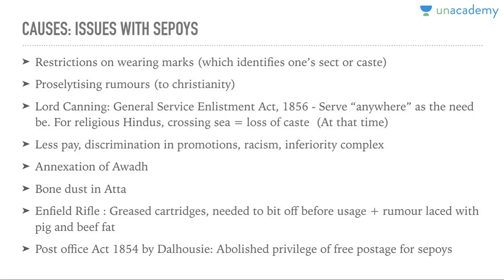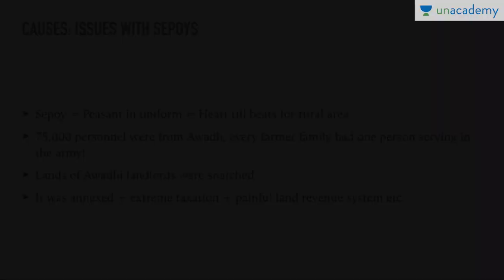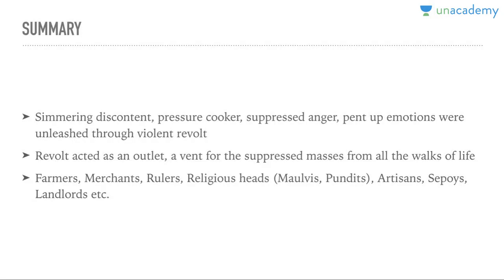The Post Office Act of 1854 abolished the privilege of free postage for sepoys. In Awadh, sepoys were nothing but peasants in uniform — their hearts beat for rural areas. Around 70,000 people were from Awadh, so almost every farmer family had one person serving in the army. Not only were their lands snatched, but Awadh was also annexed on grounds of misgovernance, with extreme taxation and a painful land revenue system. The sepoys just wanted to do something about it.